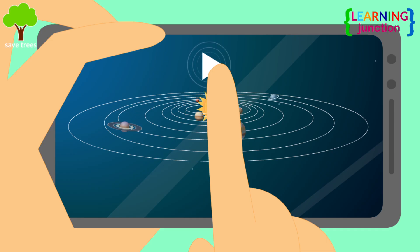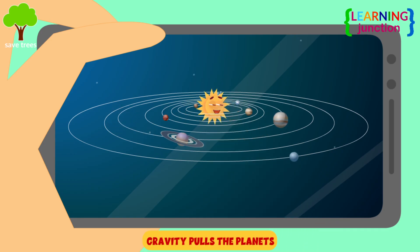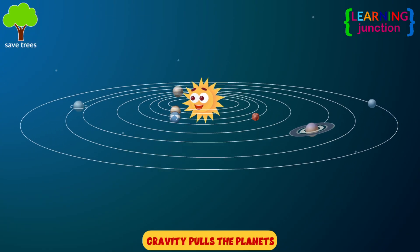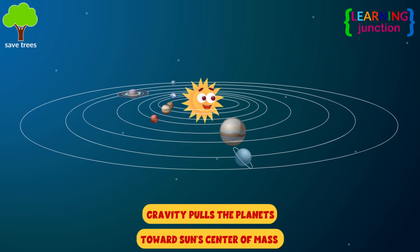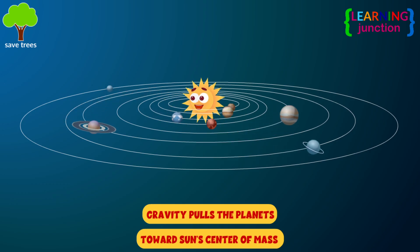The Sun's gravity pulls each and every planet and everything else toward its center of mass, so the planets orbit around it.